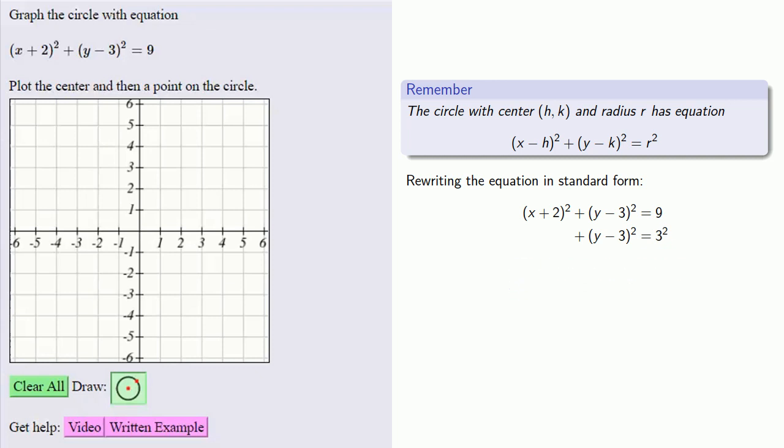And we also want an x minus h squared. And so remember that a minus negative b is the same as a plus b. And so we can rewrite this x plus 2 as x minus negative 2.